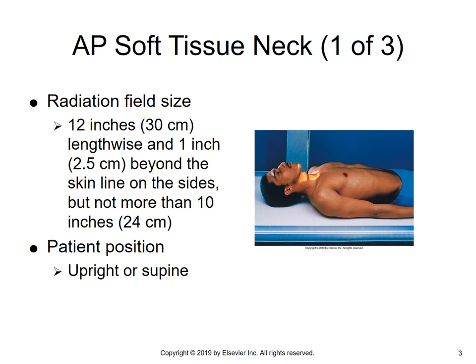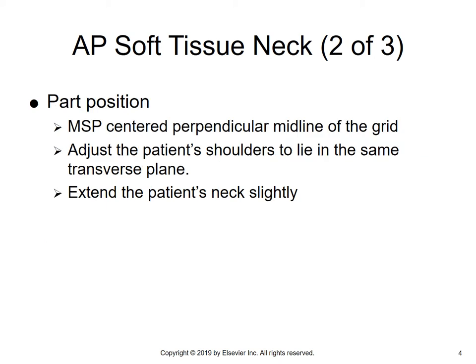For an AP soft tissue neck, the radiation field is about 12 inches lengthwise, one inch beyond the skin line on both sides. You don't want to clip any of the soft tissue. Patient can be upright or supine. Position the MSP centered perpendicular to the midline of the grid. Adjust the patient's shoulders so that they're lying in the same transverse plane, and then extend the patient's neck up slightly.